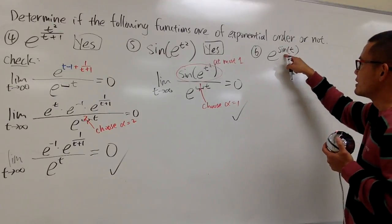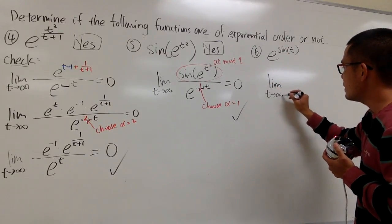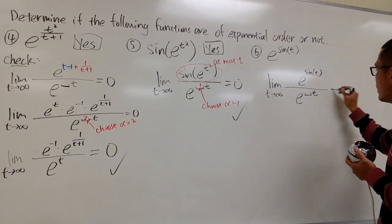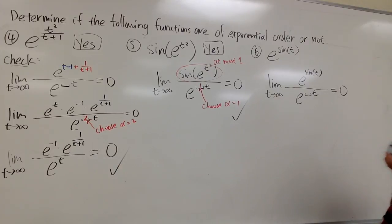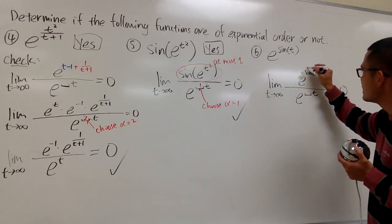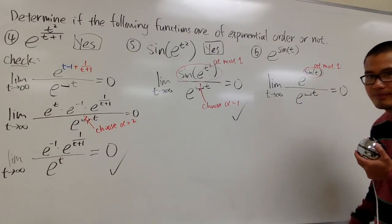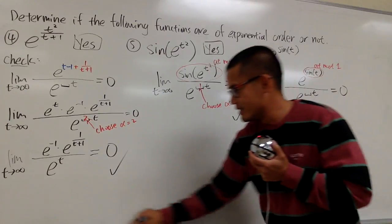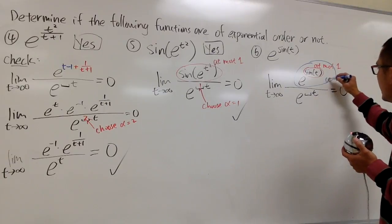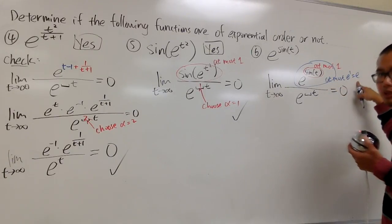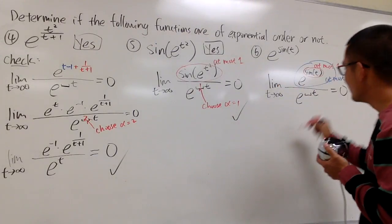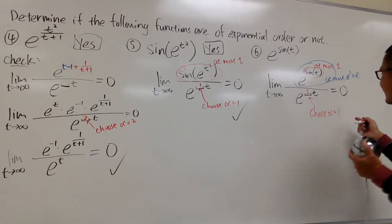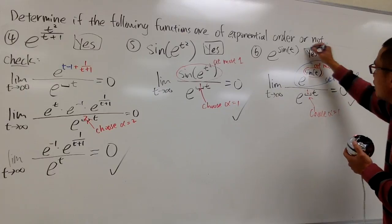Let's look at the last one: e to the sine t. We take the limit as t goes to infinity of e to the sine t over e to the something t. Sine t is at most 1, so e to the sine t is at most e to the first power, which is just e — a number. So on the bottom, all I have to do is choose alpha to be 1. You then get a finite number on top divided by infinity, which is 0. So this is also of exponential order.